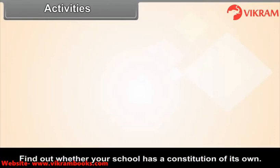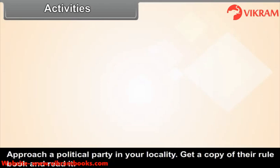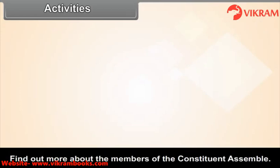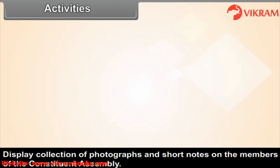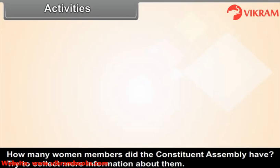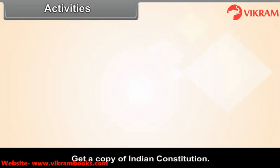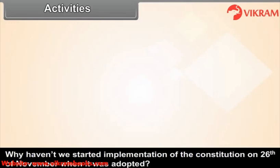Activities: Find out whether your school has a constitution of its own. Approach a political party in your locality and get a copy of their rule book and read it. Find out more about the members of the Constituent Assembly and its different committees. Display a collection of photographs and short notes on its members. How many women members did the Constituent Assembly have? Get a copy of the Indian Constitution and prepare a constitution for your class. Why didn't we start implementing the Constitution on 26th November when it was adopted?